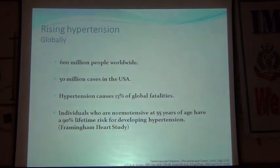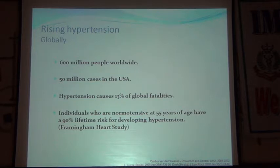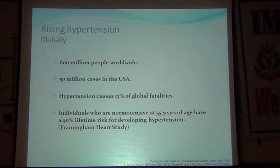Here is a very dangerous statement. From the Framingham Heart Study: individuals who are normotensive at 55 years of age have a 90 percent lifetime risk for developing hypertension. Almost 90 out of 100 people are going to have high blood pressure in their lifetime.